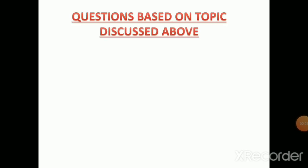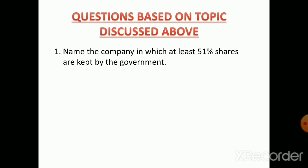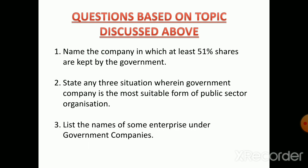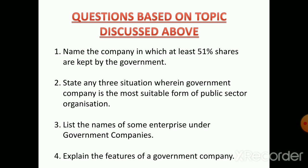Here are some practice questions based on the topic: First, name the company in which at least 51% of shares are kept by the government. Second, state any three situations wherein a government company is the most suitable form of public sector organization. Third, list the names of some enterprises under government companies. Fourth, explain the features of a government company.